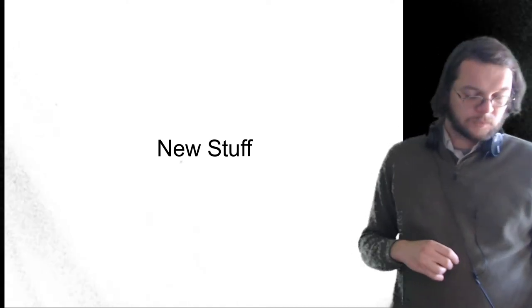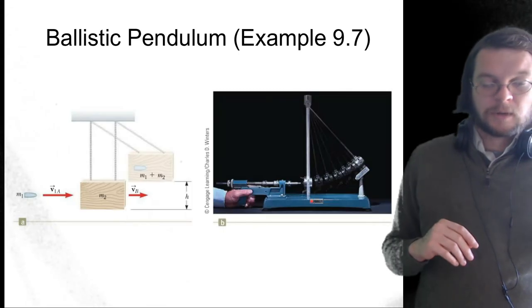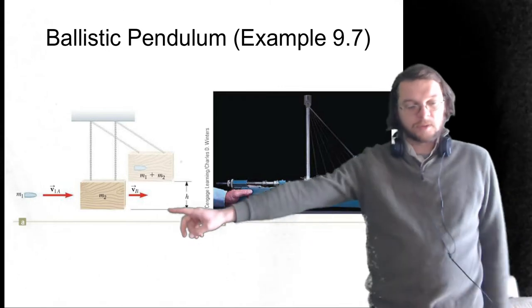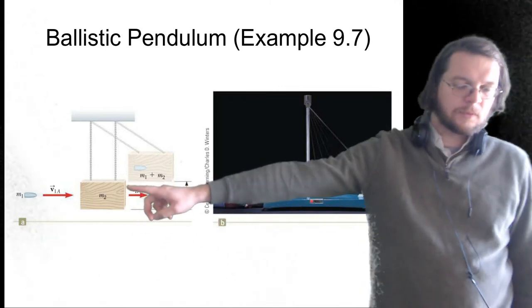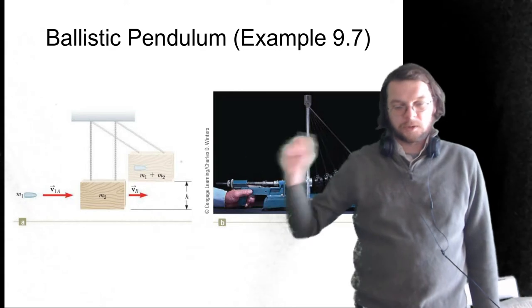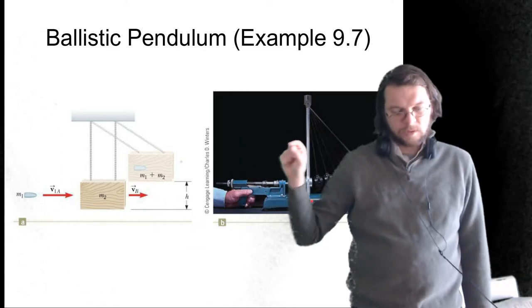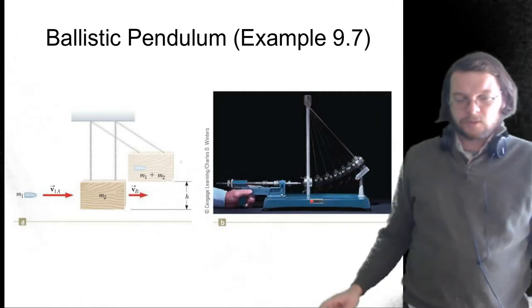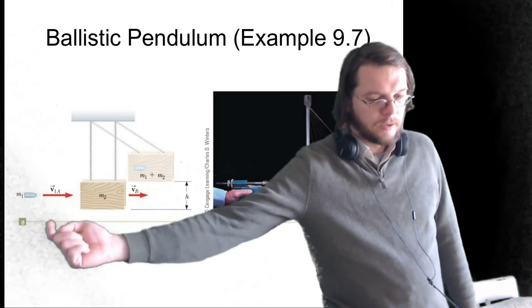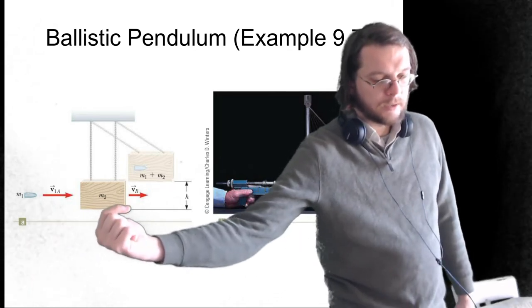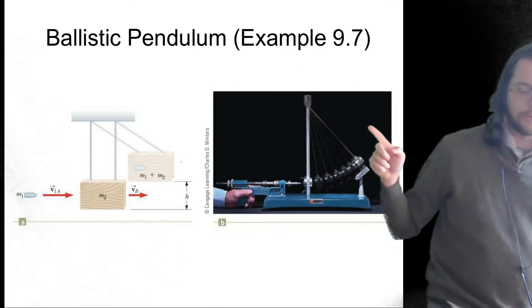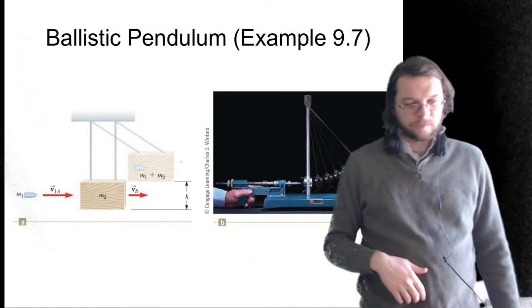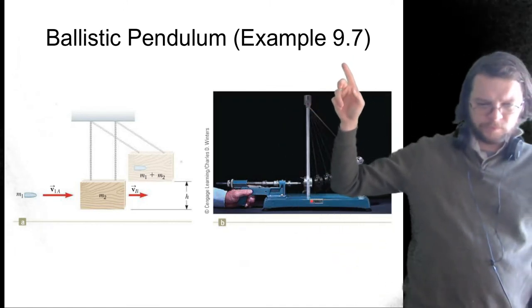Now let's talk about some new stuff — the ballistic pendulum. The idea is there's some sort of bullet or dart with a tip that gets stuck in a piece of wood or foam. The dart is shot and becomes embedded in this target, which is attached to a string, so the target swings up. There's an experiment that some people do in their classes where they fire the dart, it becomes embedded, and the target swings upward to some angle that you measure.